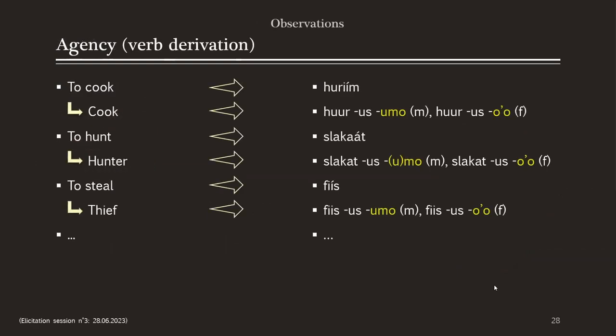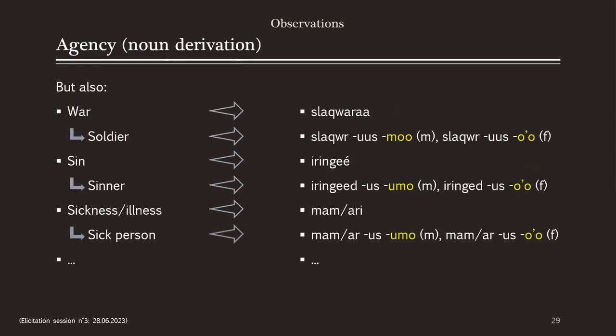Some random observations regarding agency, specifically those with verb derivation. I noticed a pattern: from the verb 'to cook' you get the noun 'cook,' HURIM, and then male form HURUSOMO and female form HURUSO — highlighted in yellow are the singletive markers. The same goes for 'to hunt' → hunter, 'to steal' → thief, and also agency in noun derivation, where for instance the word for war gives the word for soldier. So sinner from sin, sick person from illness, and so on — you can see the pattern for both masculine and feminine forms.